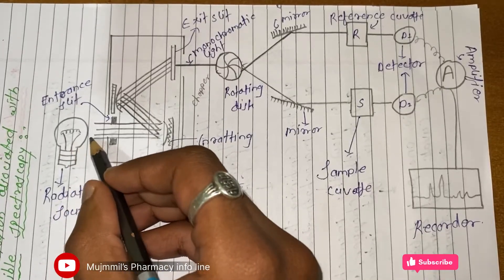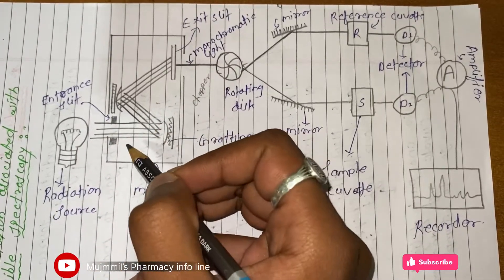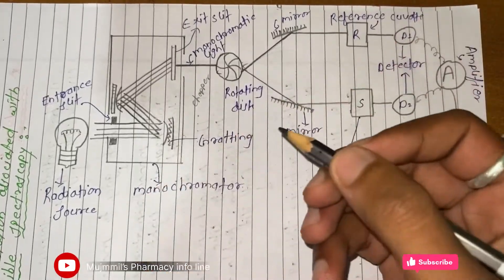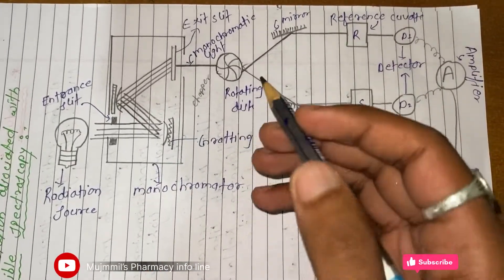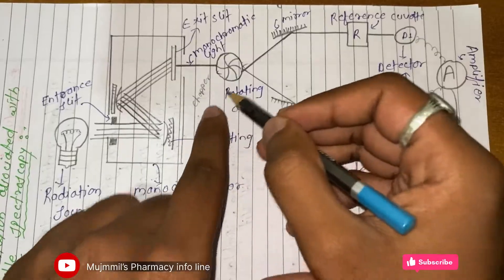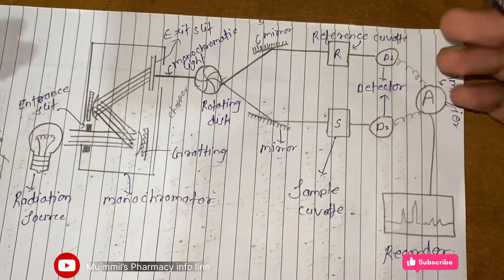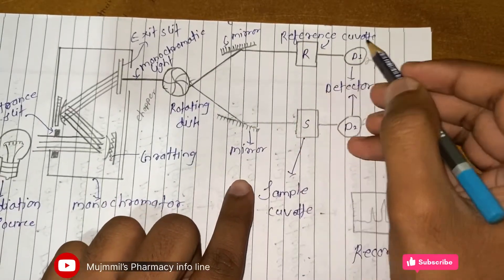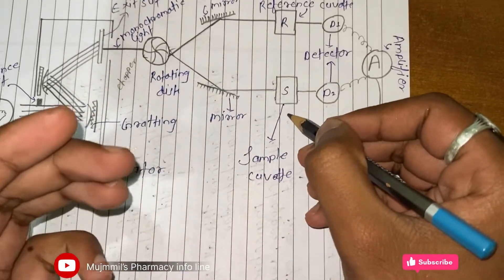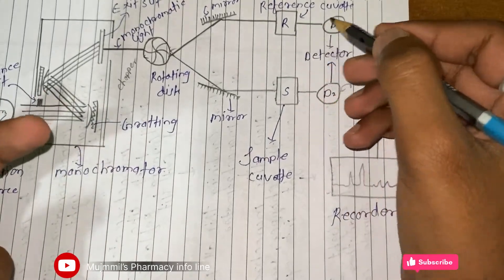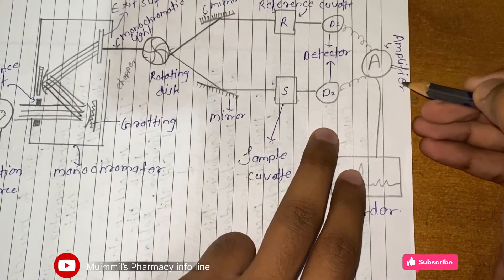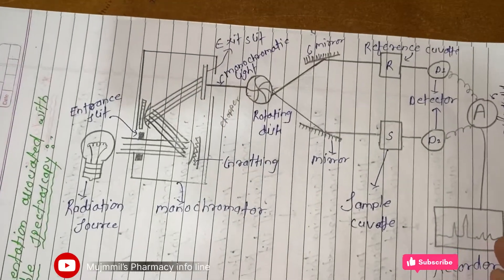The working: the radiation source emits polychromatic light, which must be converted into monochromatic light using the monochromator. The monochromatic light goes to the chopper, which divides it into two beams. Via mirrors, one beam goes to the reference cuvette and another to the sample cuvette containing the sample we are analyzing. The beams then go to the detectors, then to the amplifier, and finally the result is recorded.